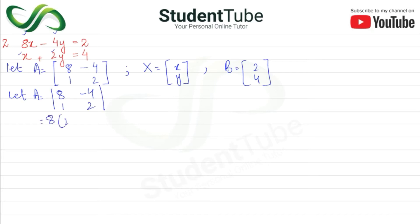The determinant of A equals 8 times 2 minus 1 times minus 4, which gives 16 plus 4 equals 20. Now we find the adjoint of A.